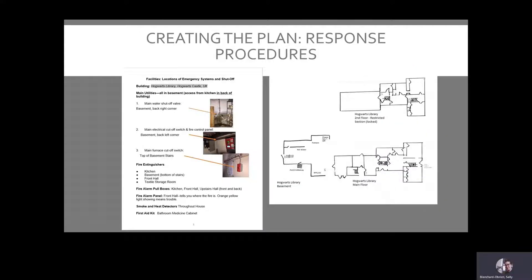Here you have an example of floor plans labeled with locations of important building systems equipment such as water tanks and furnaces. It's important to note special circumstances on the floor plans — for example, the restricted section is stored on the second floor of the Hogwarts library and is normally kept locked, so you'd need a key to get in. There's also a list of locations of fire extinguishers, fire alarm pull boxes, and utility switch-offs, with photos showing clearly where the shutoffs are. All of this information is very important during the chaos of an immediate disaster, allowing you or emergency responders to quickly look at the floor plan and shut off anything that needs to be stopped to prevent further damage.